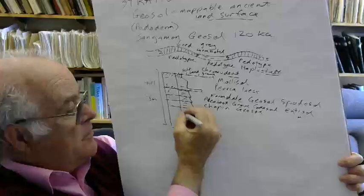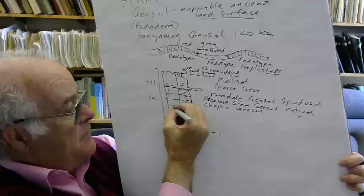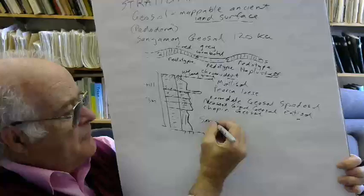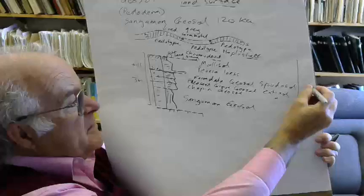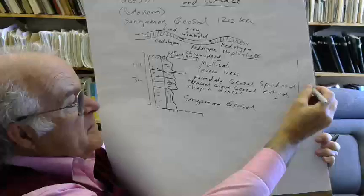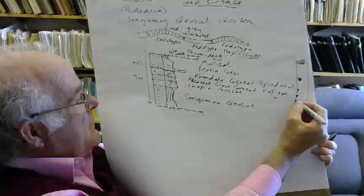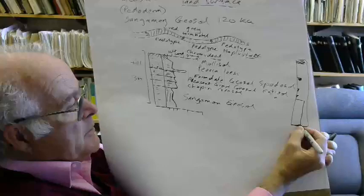The idea is that we name these things as breaks in sedimentation during the Quaternary. There was a movement afoot for a while to call these pedoderms. Some people will use that term. Not too many though. But it had the same kind of usage. An example is the Sangamon geosol, about 120,000 years old.